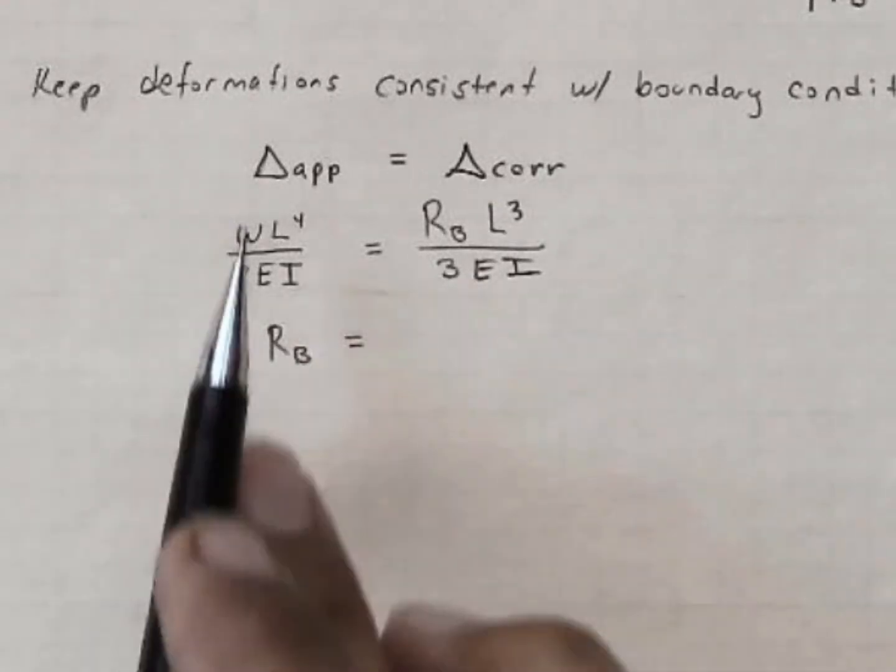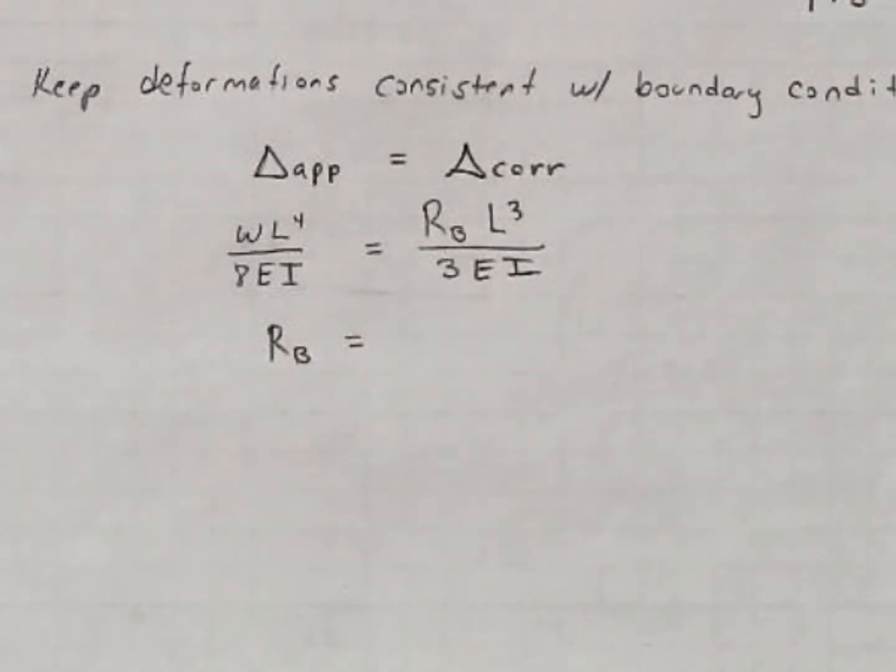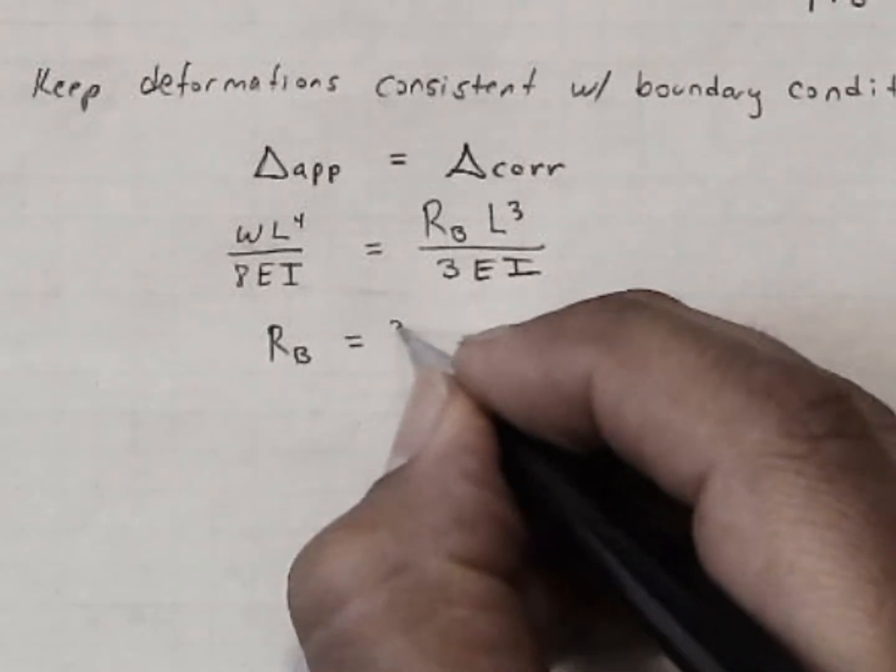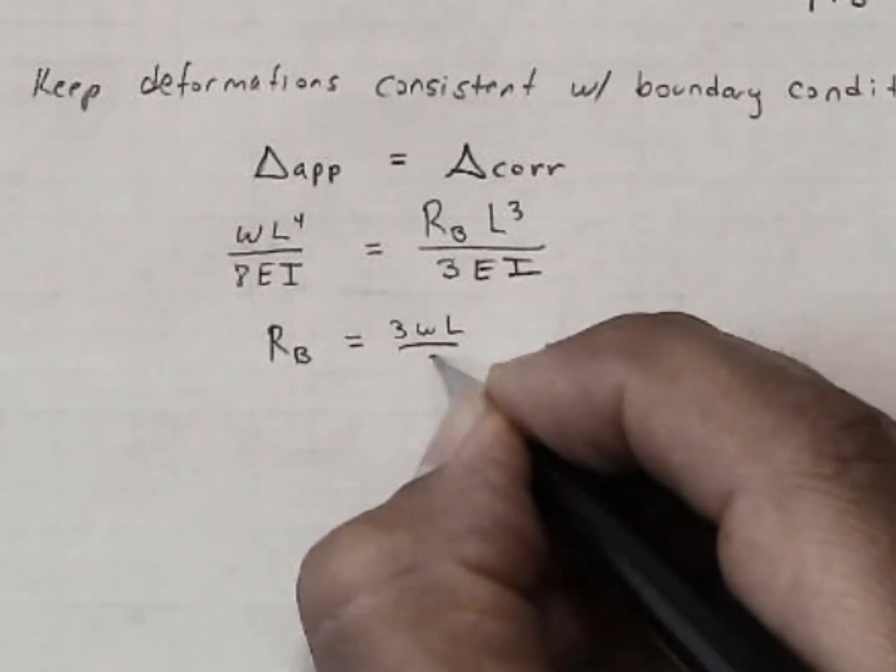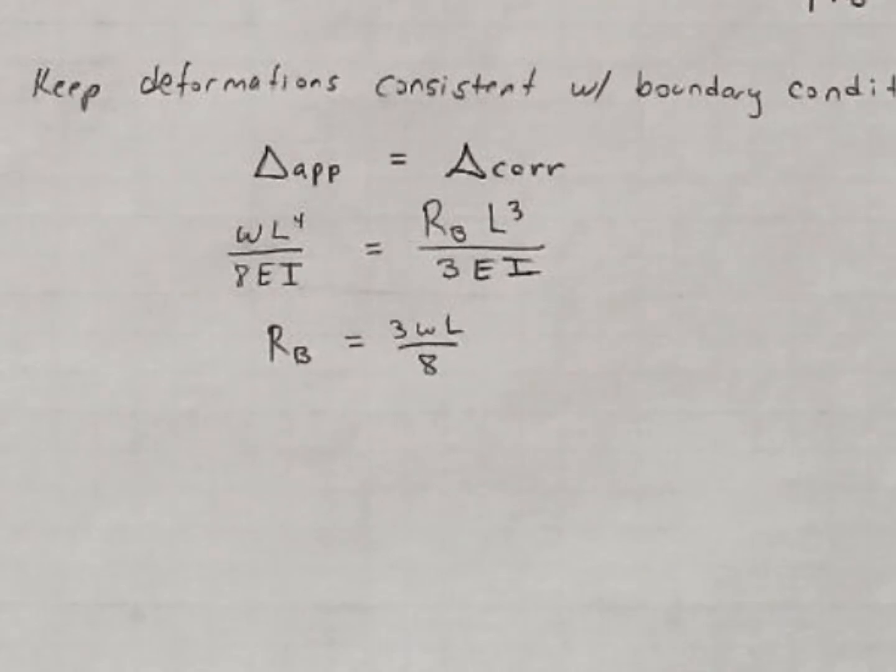And then the 3 comes up, the 8's here. So I get 3WL over 8. If that's not clear to you, pause the video, work on the algebra. That's the new part of the method.